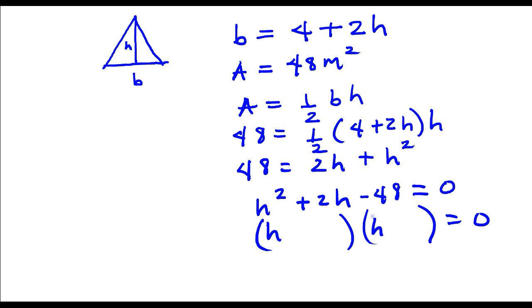I'm looking for two numbers whose product is negative 48 but whose sum is 2. I'm going to use 6 and 8, the 8 would be positive, the 6 has to be negative.